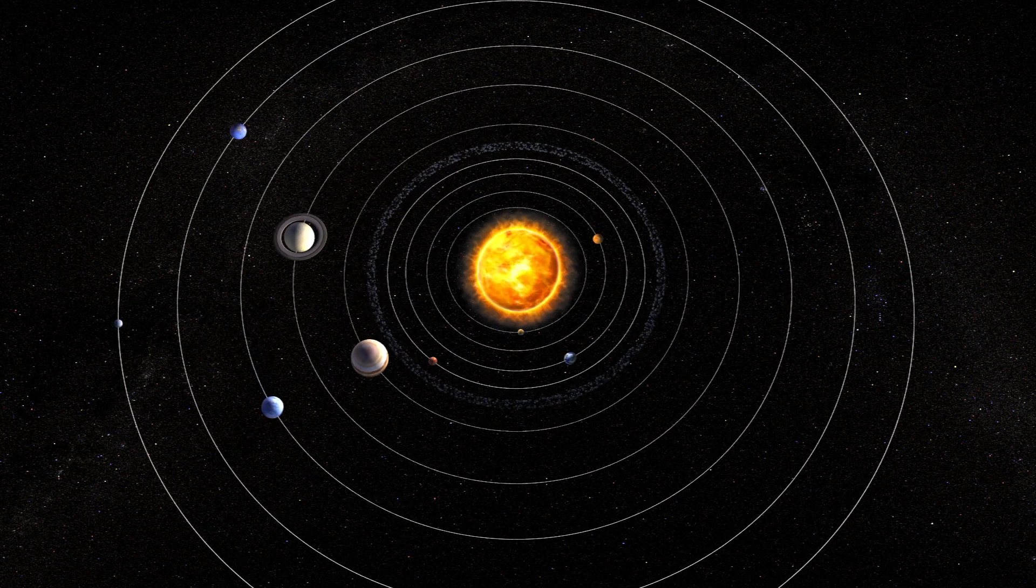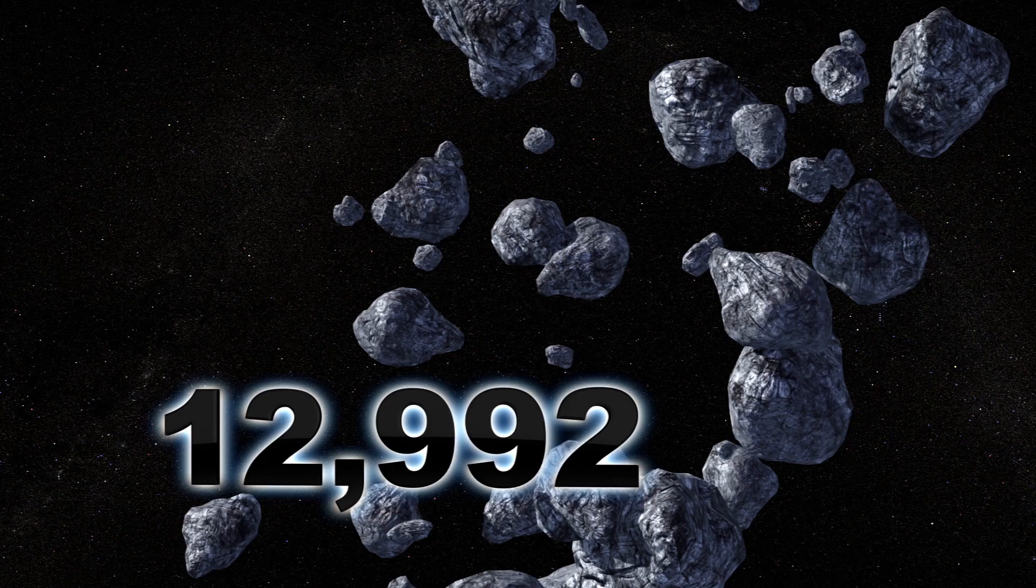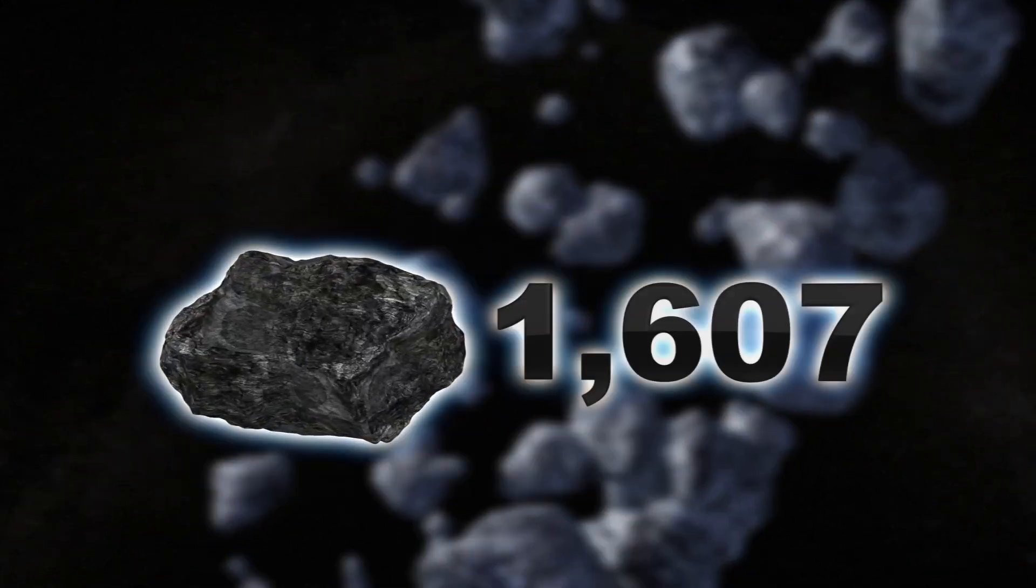NASA tracks around 12,992 near-Earth objects orbiting within our solar system. The agency estimates that around 1,607 of them are potentially hazardous asteroids.